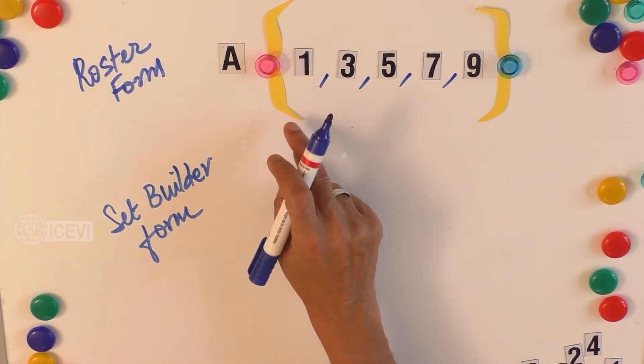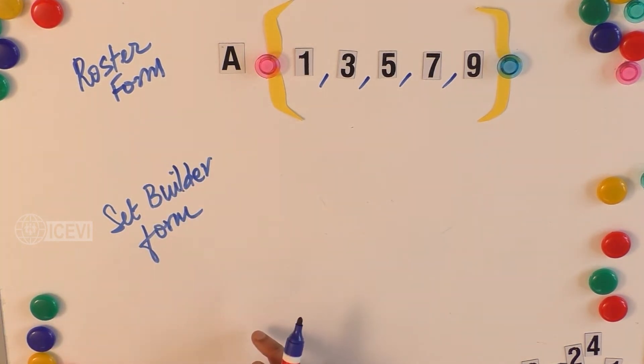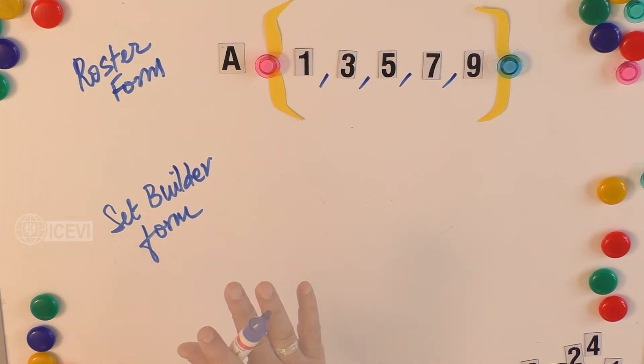So this way of presenting the set is called Roster Form. Most of the sets are presented like this. Let us take the same set in the set builder form and see how it is presented.